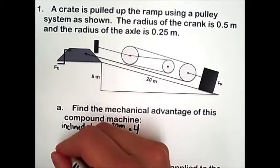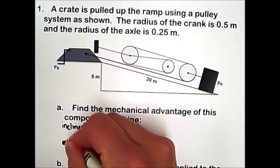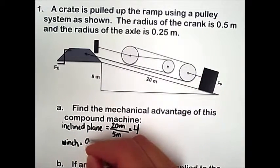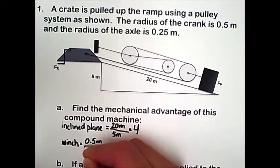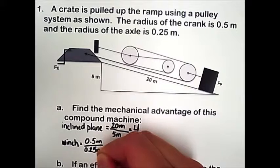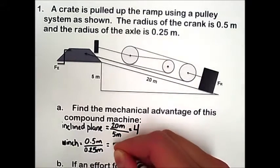Next we'll look at the winch. So in the winch, we have the radius of the crank is 0.5 meters, and the radius of the axle is 0.25 meters. So dividing that out, we end up with a mechanical advantage of 2.